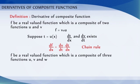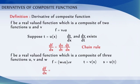Suppose f is a real-valued function which is a composite of three functions u, v, and w, that is f = w ∘ u ∘ v. If t = v(x) and s = u(t), then df/dx = d(w ∘ u)/dt × dt/dx, which equals dw/ds × ds/dt × dt/dx, provided all the derivatives in the statement exist.